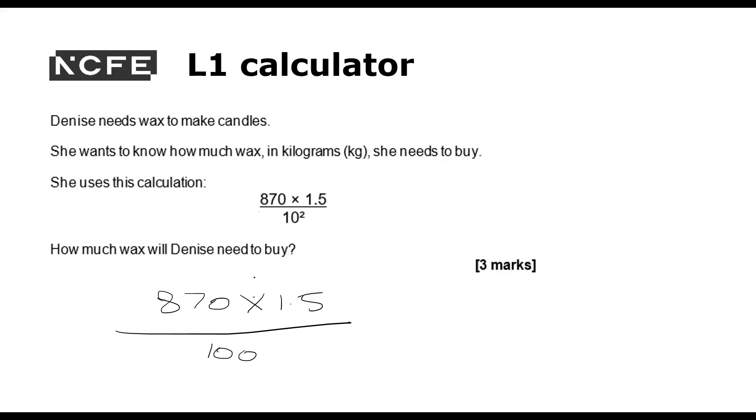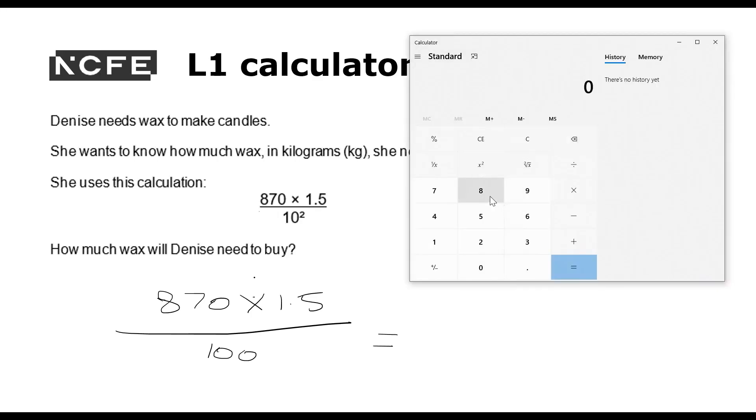And in theory, division comes before multiplication, but not when it's written like that. You can almost put in brackets here. So we're going to look at what is above first. So we'll do 870 times 1.5 and I'm allowed a calculator. So over here, just so you can see what I'm doing. So we've got 870 times 1.5 equals 1305.